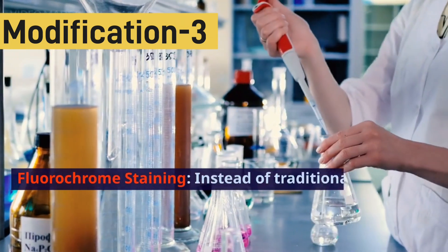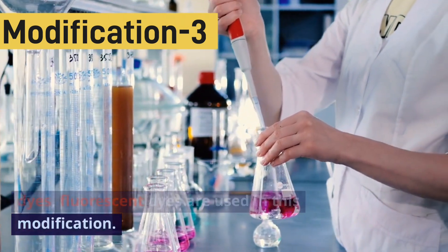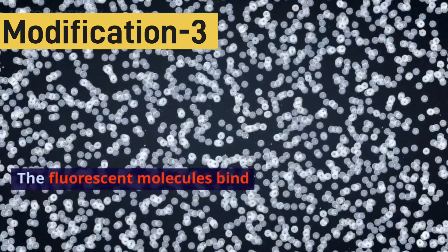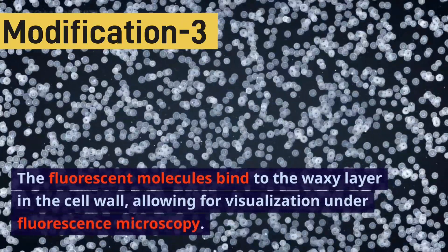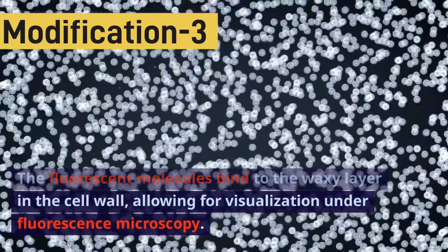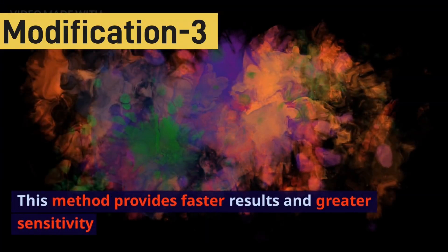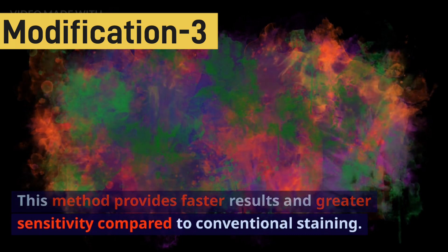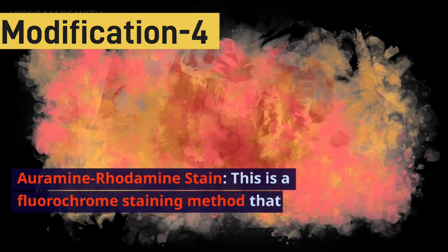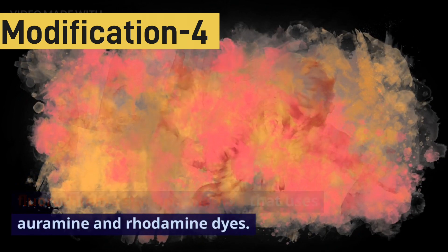The next modification is fluorochrome staining. Instead of traditional dyes, fluorescent dyes are used to identify the bacteria. The fluorescent molecules bind to the waxy layer in the cell wall, allowing for visualization under fluorescence microscopy, which is very efficient. This method provides faster results and greater sensitivity compared to conventional staining, which is why it is considered the gold standard method.